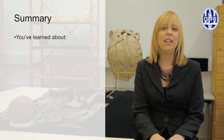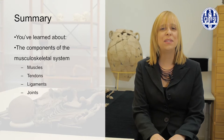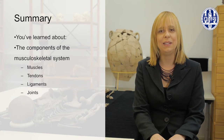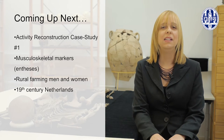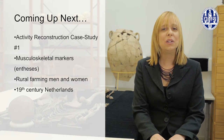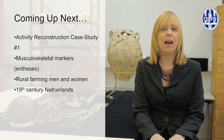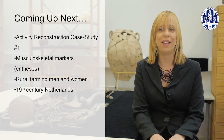In summary, in this video you've learned about the different components of the musculoskeletal system: muscles, tendons, ligaments, and joints. This will be important as we move ahead with our case studies. Our first case study is coming up next and looks at how musculoskeletal markers called entheses reveal differences in the labour patterns of rural farming men and women from 19th century Netherlands.